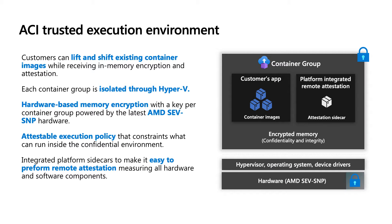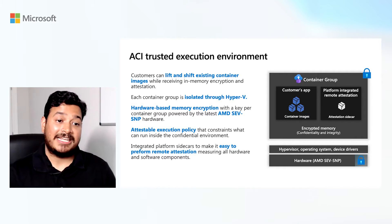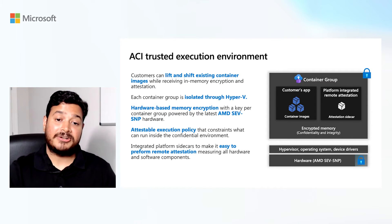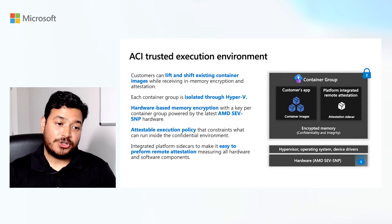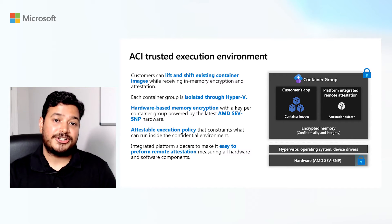We've built on this innovation of ACI and now have the offering of confidential containers on ACI. With this model, customers can lift and shift their existing containers while receiving the additional benefits of confidentiality, which includes in-memory encryption and attestation. Every container group is already isolated by the hypervisor, but now we have the addition of hardware-based memory encryption with a key per container group powered by the latest AMD SEV-SNP hardware. We have also introduced the notion of an attestable execution policy that constrains what can be run in this environment, and we have provided open-source integrated remote attestation and confidential primitive sidecars such as secure key release.